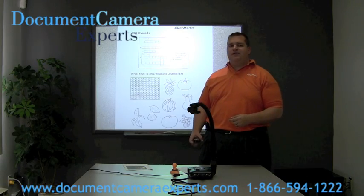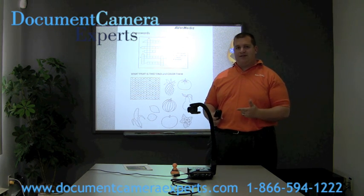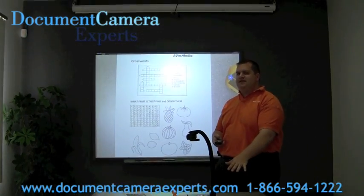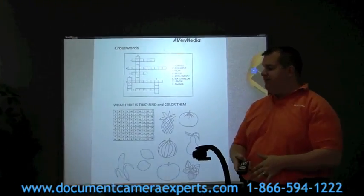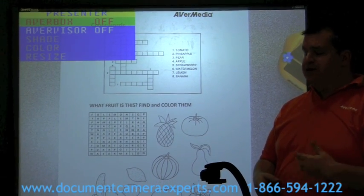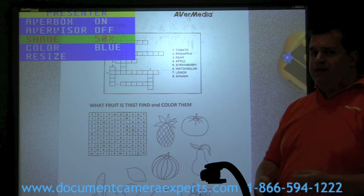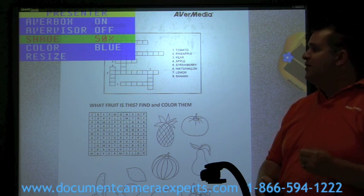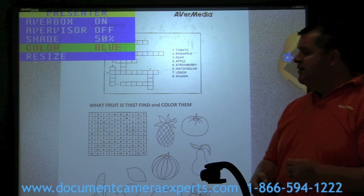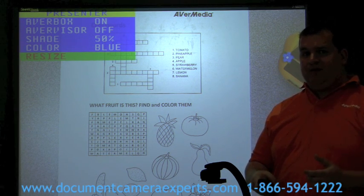The AVerVision CP300 has two presentation features unique to this document camera: AVerBox and AVerVision. Using the remote control or the base, you select presenter, which brings up those presentation features. Let me show you AVerBox first. You hit enter to turn AVerBox on. You can select your shade from 0%, 50%, or 100%. We'll leave it at 50%. You can choose the color of your box from red, blue, or green — we'll leave it on blue. You can also resize your box to the object you are presenting.